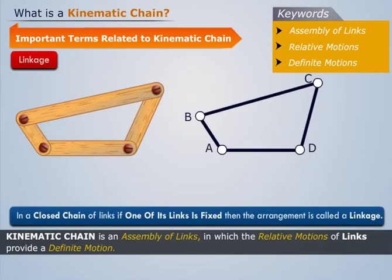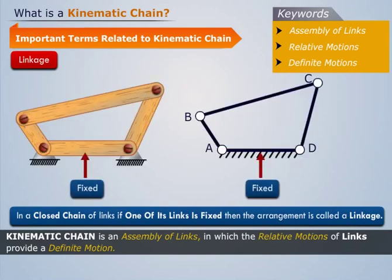In a closed chain of links, if one of its links is fixed, then the arrangement is called a linkage. A four-bar chain whose link AD is fixed is an example of linkage.